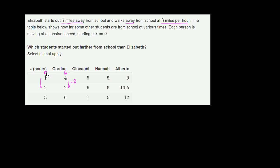Notice it's consistent. In the first hour, he would have gotten 2 miles closer to school. Then the next hour, he would have gotten 2 miles even closer. And in the third hour, he actually gets 2 miles closer and he actually gets to school. So Gordon started out 6 miles away at t equals 0. So Gordon did start out farther from school than Elizabeth. So we can circle Gordon. He meets the conditions.